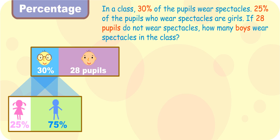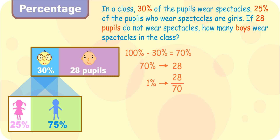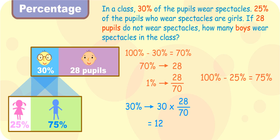Now, try another problem. In a class, 30% of the pupils wear spectacles. 25% of the pupils who wear spectacles are girls. If 28 pupils do not wear spectacles, how many boys wear spectacles in the class, Turbo Girl? Since 30% of the pupils wear spectacles, that means 70% of them do not. Thus, 70% represents 28, and 1% is 28 over 70. So 30% is 30 times 28 over 70, which equals 12. So 12 pupils wear spectacles. 75% of those who wear spectacles are boys. So 75 over 100 times 12 equals 9. Therefore, 9 boys wear spectacles.